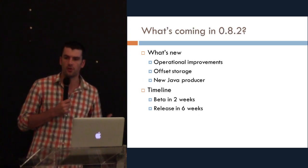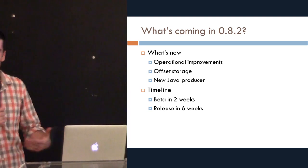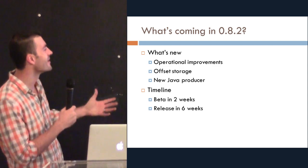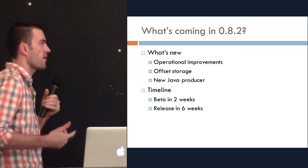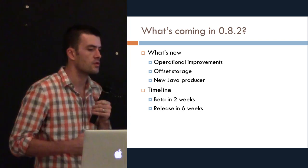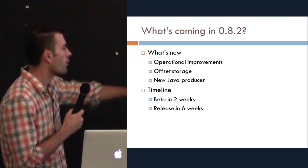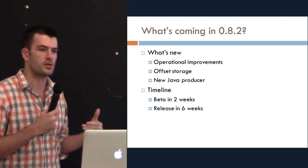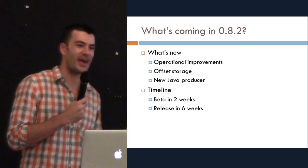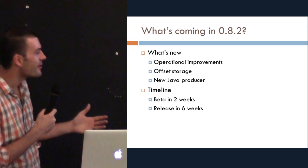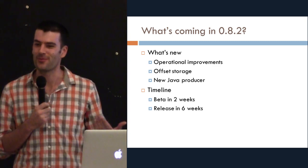The release we're about to do is 0.8.2. We have these decimal point releases — when we get the whole vision done, that's version 1.0. The new things in 0.8.2: operational improvements, a new way of storing consumer positions, and a new version of the Java producer. We're pretty close to being able to do a beta release. Previously we'd always just done a real release and then realized retrospectively it was a beta. The trade-off with open source is if you call it beta, nobody tries it.